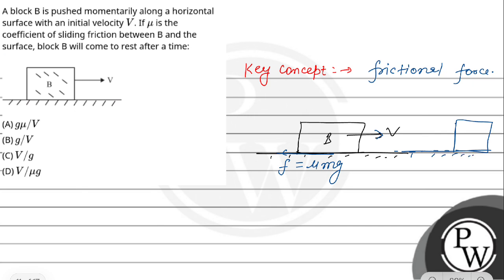We need to find how much time after it stops, so we have to tell what is t equal to. The question gives us initial speed u equal to V. Final speed is equal to 0. We have friction force is mu mg, then acceleration is mu into g. So we have v equal to u plus at.